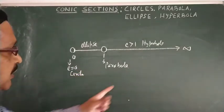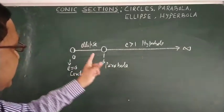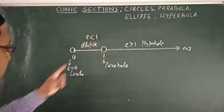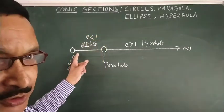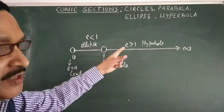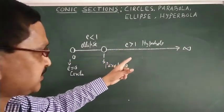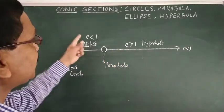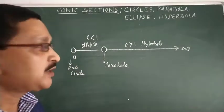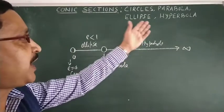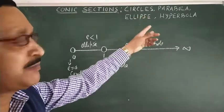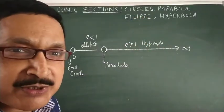So on the basis of eccentricity, we can define all conic sections. Ellipse has e less than one, and e less than zero is not possible since eccentricity is a ratio. In the next video, I will give you the concept of parabola — circle is already taught — then parabola, then ellipse, then hyperbola. Thank you very much, students.